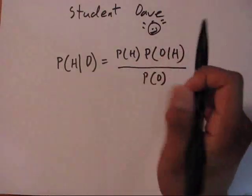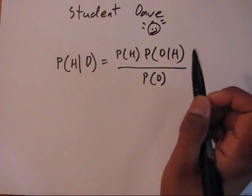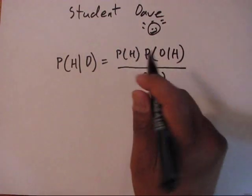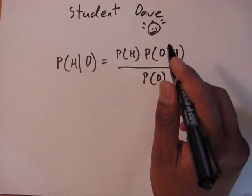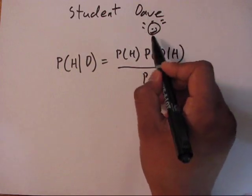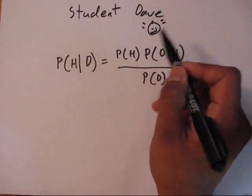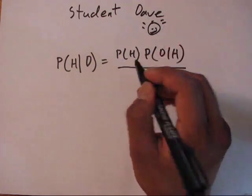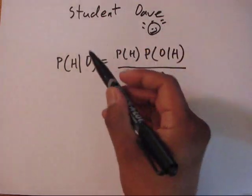Hello everybody, this is student Dave again, and today we're going to talk about Bayesian inference. A little smile on the face that kind of looks like a joker unintentionally, but whatever.